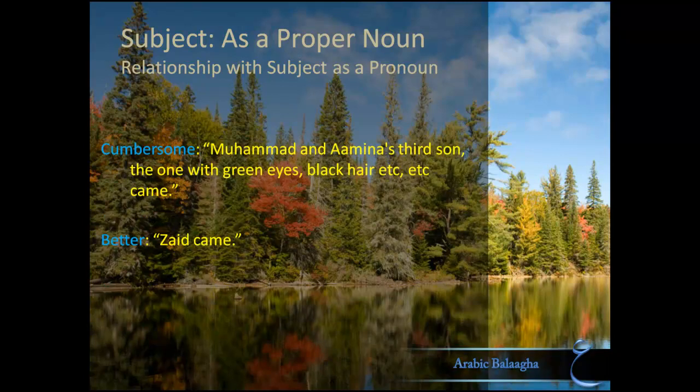Proper nouns, or names, serve a similar purpose. They prevent us from having to mention everything about the subject and just refer to it using a short designation. For example, instead of saying 'Muhammad and Amina's third son, the one with the green eyes, black hair, etc., came,' you can just give that person a name that represents him, and simply say 'Zaid came.' The proper noun Zaid represents this person, and whenever somebody says Zaid, that person comes to mind with all his qualities and attributes.